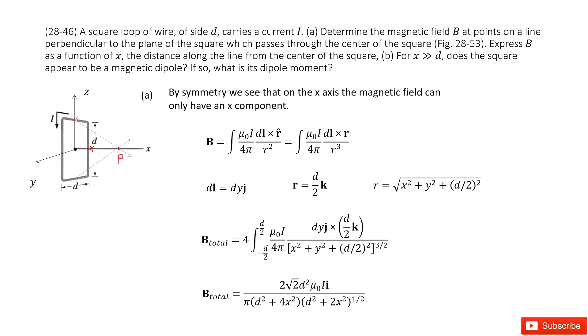By mirror symmetry, we can see for the top side and the bottom side, if we draw the magnetic fields there, only the x components survive.